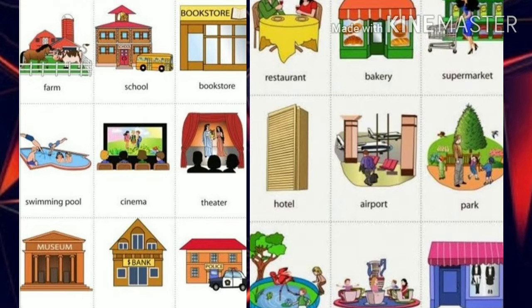Yes, it can be a cinema hall, restaurant, amusement park, post office, school, hospital, airport. So there are so many places in the city where you can go, right? There are so many places in the city.